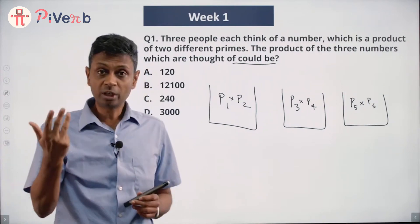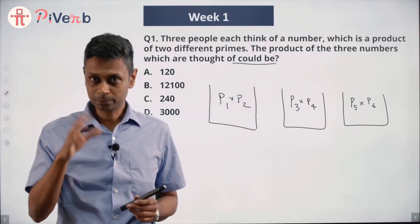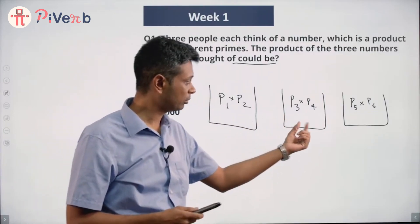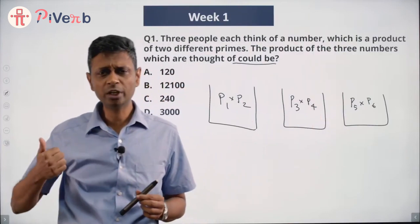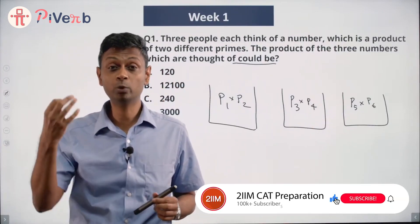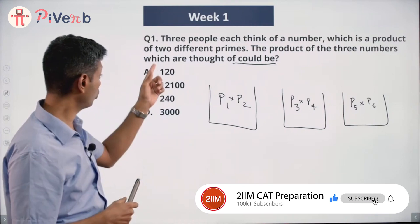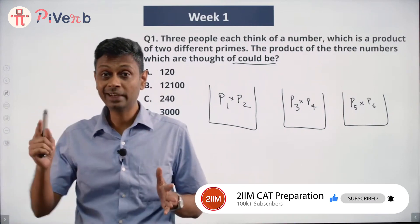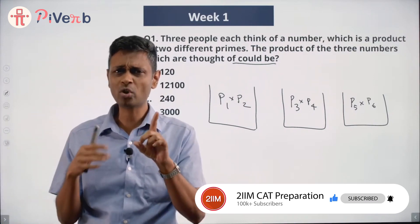Where p1, p2, p3, p4, p5, p6 are all primes. The overall product is p1 × p2 × p3 × p4 × p5 × p6, and only one of the four answer choices could equal this — the other three cannot.